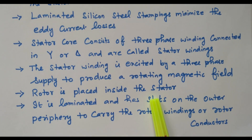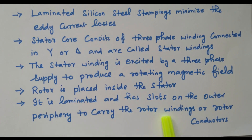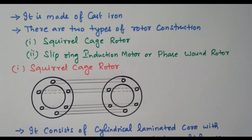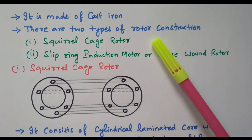The rotor is placed inside the stator, as shown in the diagram. It is laminated and has slots on the outer periphery to carry the rotor winding or rotor conductors. This rotor also has slots that are laminated, and in those slots the rotor winding or rotor conductors are placed. The rotor is made up of cast iron.